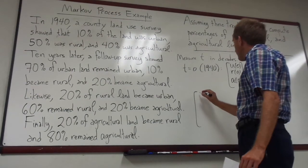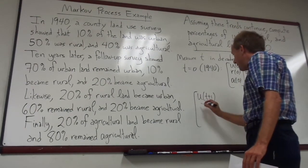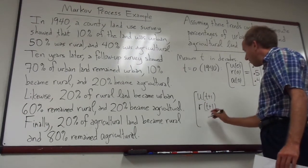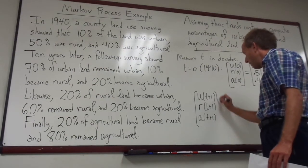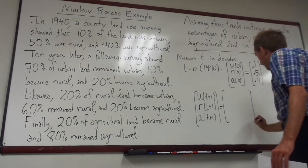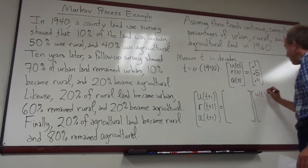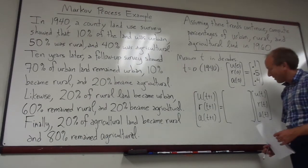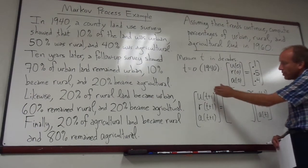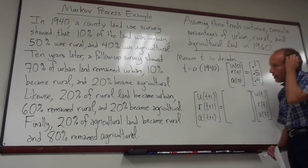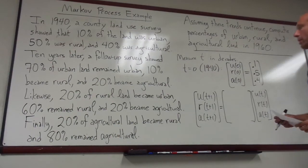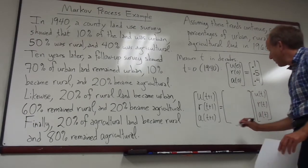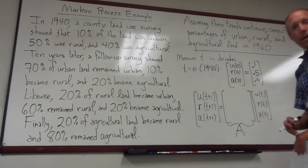What we want to do is think about one decade later — we write this as U(T+1), R(T+1), and A(T+1) — and figure out how to express that in terms of the current urban, rural, and agricultural distributions of the land. From all of these words, we're going to fill in the numbers of a 3×3 matrix, which is what we would normally call capital A.